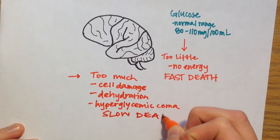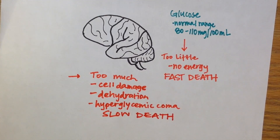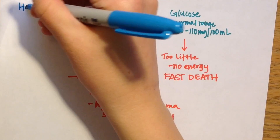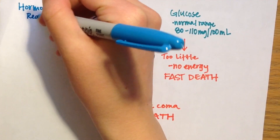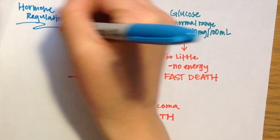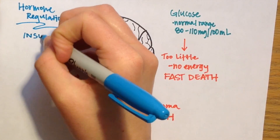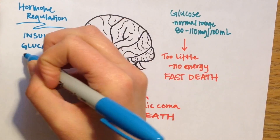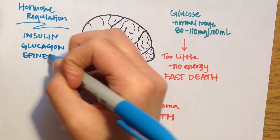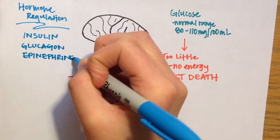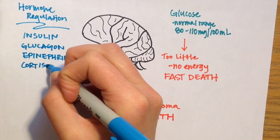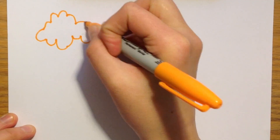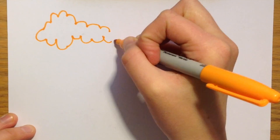In the rest of this video, we will be discussing the hormone regulation of plasma glucose, focusing on hormones insulin, glucagon, epinephrine, cortisol, and growth hormone, as well as some other hormones that regulate the production and secretion of these hormones.